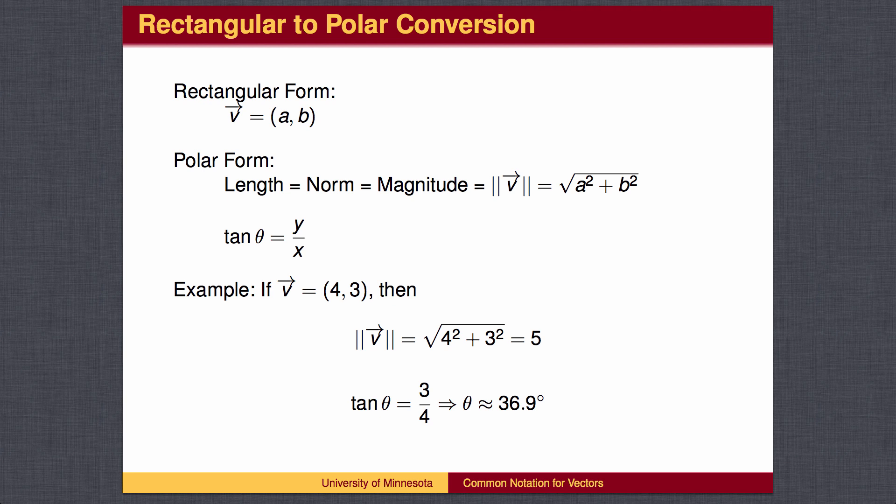To convert from rectangular coordinates to polar coordinates, find the length by the Pythagorean theorem and the angle by the inverse tangent. In vector terminology, the length is also referred to as the norm or the magnitude. The symbol for the length looks like a double absolute value, which is appropriate.